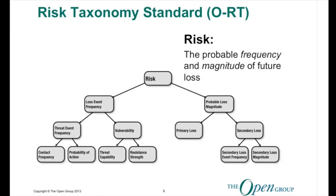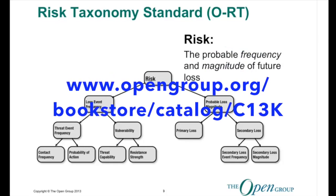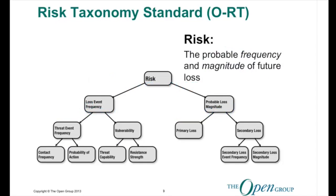The material we're going to be covering today in the analysis piece is based upon two standards introduced by the Open Group: the Risk Taxonomy Standard. This is a standard we published four years ago and revised last year, that looks at how you decompose risk into its constituent parts, looking at loss event frequency and probable loss magnitude. I'd encourage you to get a copy from our website — it's free to download from the Open Group Publications page.